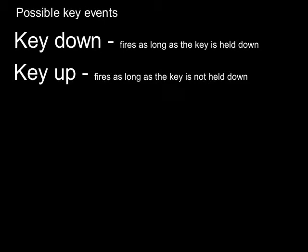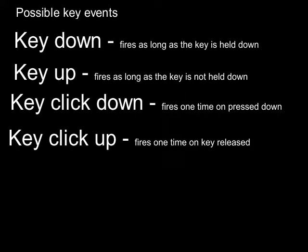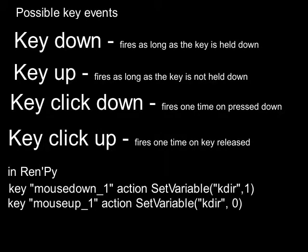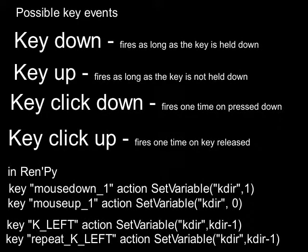First, a little general stuff on using keys for input in a game. We have four basic states that we want to be able to check for: key down and key up. With key down we get input as long as the key is pushed down, but often we will only want to get one input when the key is pressed down or let up — key click down and key click up. With mouse button we had the option mouse down and mouse up in Ren'Py. For keys on the keyboard we really only have key click down. There also is a repeat function, but that will not help us here, at least not as far as I have been able to figure out up to this point.